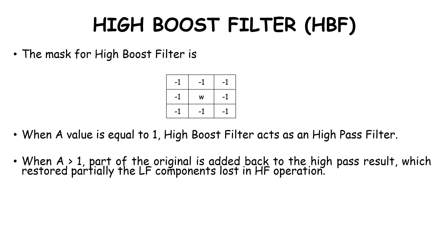When A > 1, part of the original is added back to the high pass result, which partially restores the low frequency (LF) components. HF means high pass filtering. The formula is W = 9A - 1.